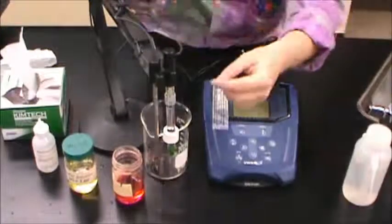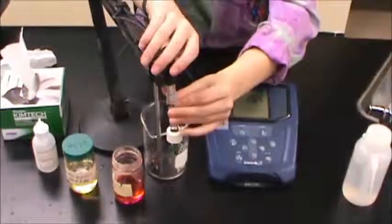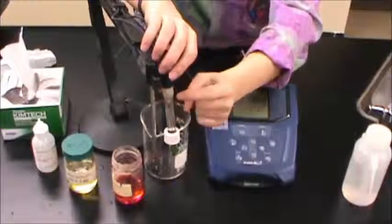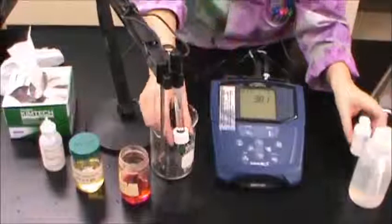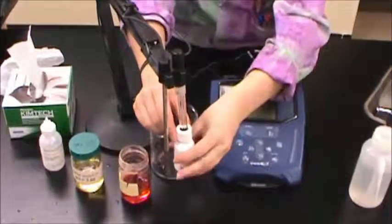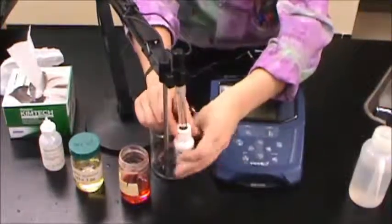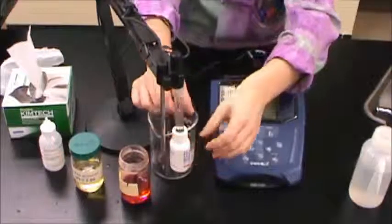Also make sure to move the band around the pH electrode so that the vent hole is covered back up. Finally, replace the bottle of electrode storage solution on the end of the pH probe. The instrument can now be turned off and returned.